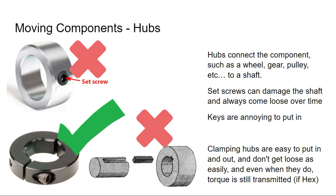Favorite shaft? Definitely hex. Hex is so good. Square shaft from VEX is similar in terms of transmitting torque, but hex is a little bit more standard — I've only really seen square shaft in VEX. Hex is kind of the standard, especially in FRC. There is some wear on old hex shafts from clamping hubs, but it's very minimal. Under normal FRC use, you're not going to round down your hex shaft — you'd probably snap something else before that happened.